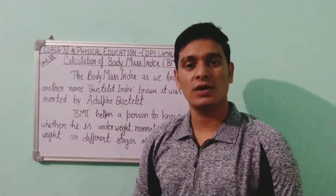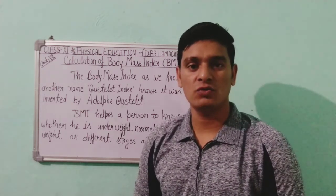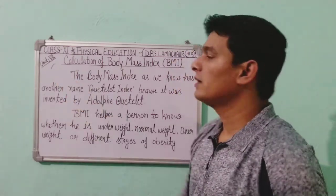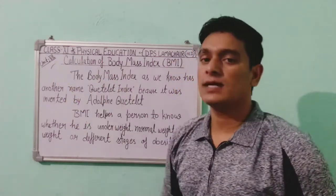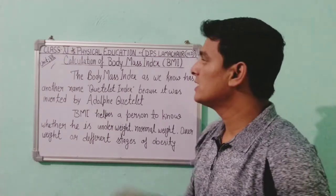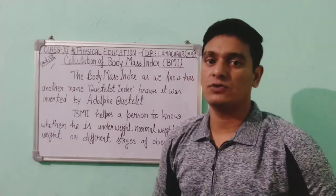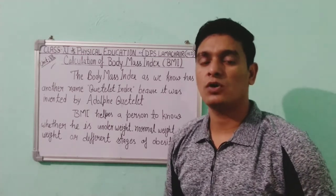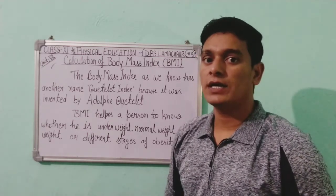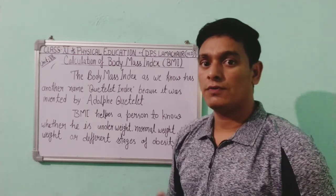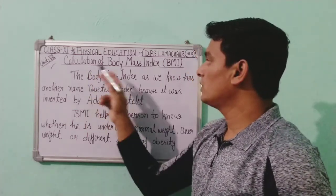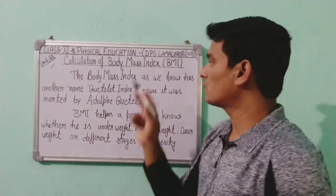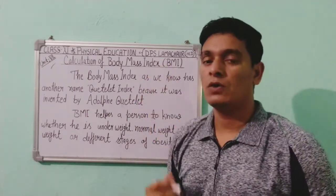Hello everyone, hope you all are healthy and safe at home. Dear students, today we are going to discuss Unit 7 of Physical Education for Class 11. Unit 7 is Test, Measurement and Evaluation. In the last video we discussed the importance of test and measurement, and in today's video we are going to discuss the calculation of Body Mass Index, which is also called BMI.